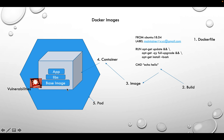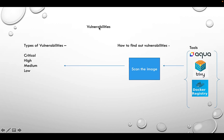In this whole pipeline, where do vulnerabilities come in? Vulnerabilities are security risks. They can be part of the base image — for example, if you're pulling Ubuntu, you can check on Docker Hub whether it has vulnerabilities. There are also vulnerabilities in libraries you add, like curl, OpenSSL, or Spring Boot — any package can carry vulnerabilities.